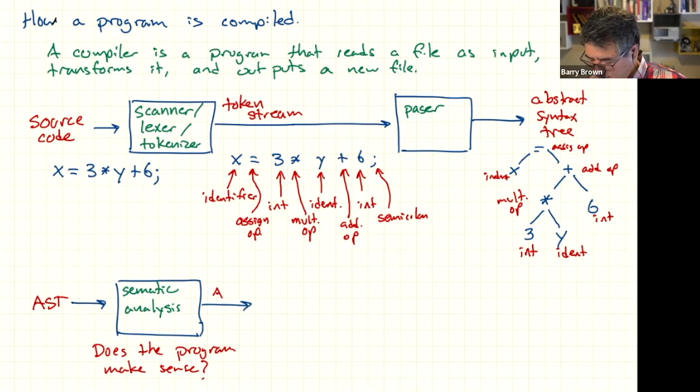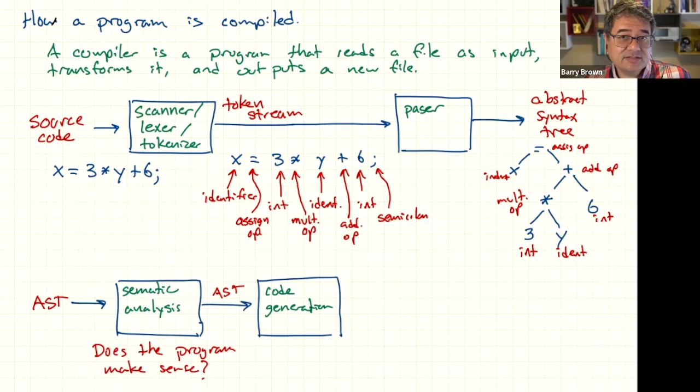So the semantic analysis asks the question and verifies, does the program make sense? So the abstract syntax tree comes out of semantic analysis, and it goes into code generation. And this is where the final transformation is made from basically the source code into the target language. The code generator might produce assembly language at its output. It might produce another programming language like JavaScript at its output.